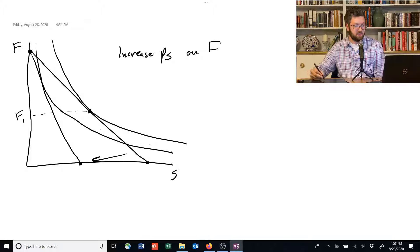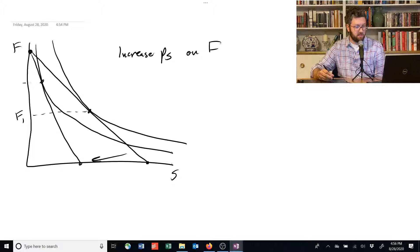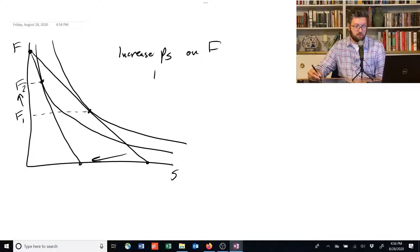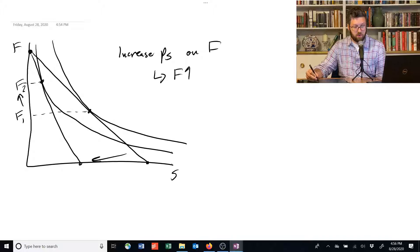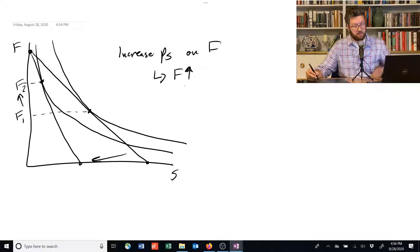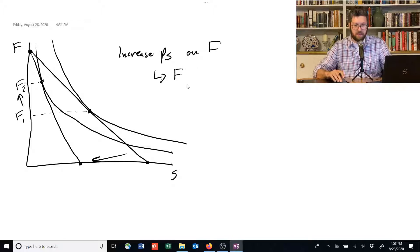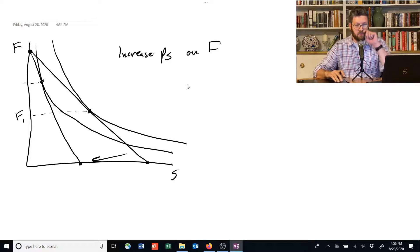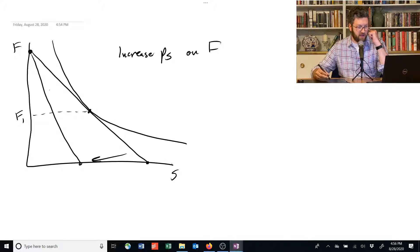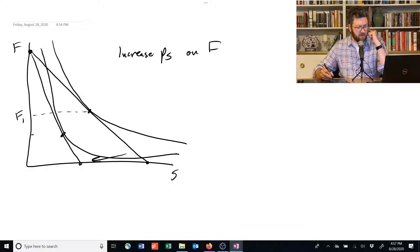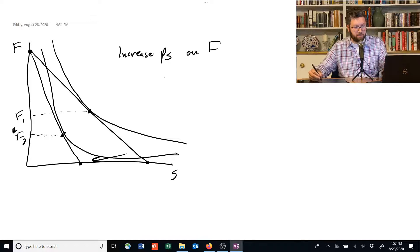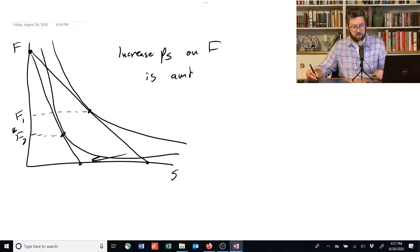We could have an indifference curve that looks like this, in which case the demand for food would go up. So we could have food go up if the price of shelter goes up, but that's not the only option. Let's instead draw an indifference curve that looks like this. And now the amount of food demanded has gone down. So the impact on food and shelter or on the demand for food is ambiguous.